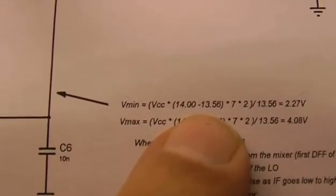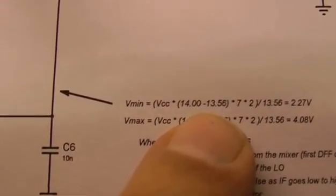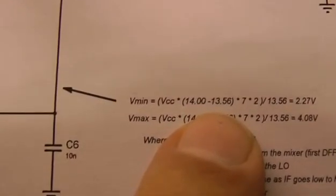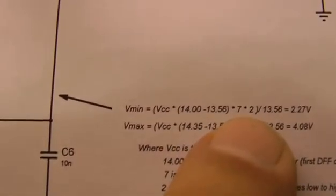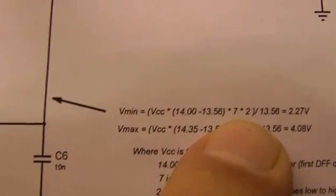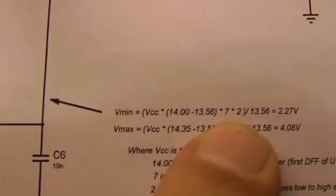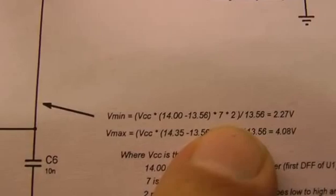That gives us the number of pulses per second out of the digital mixer. And then we get the duration of the pulses which is 7 units given by the 7 stages of the shift register.